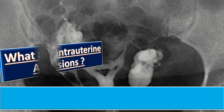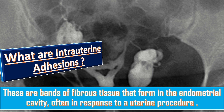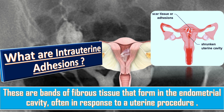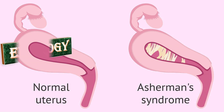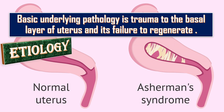Intrauterine adhesions are bands of fibrous tissue that form in the endometrial cavity, often in response to a uterine procedure. The basic underlying pathology is trauma to the basal layer of the uterus and its failure to regenerate.